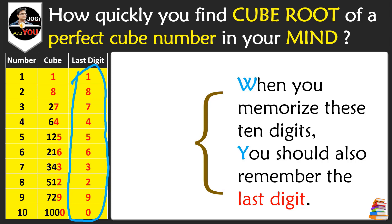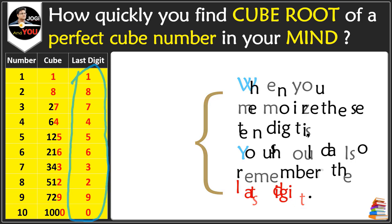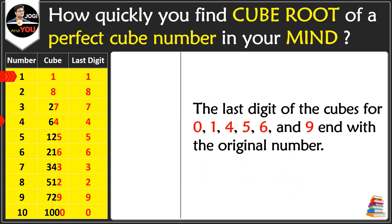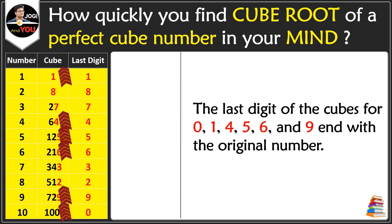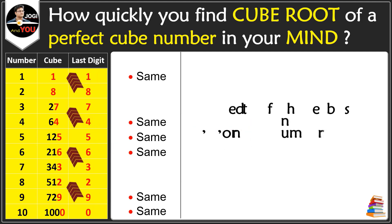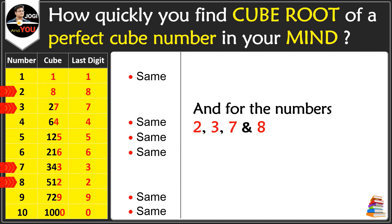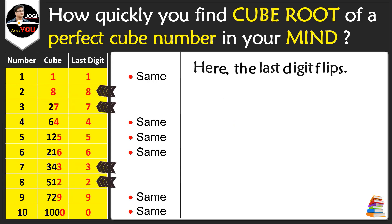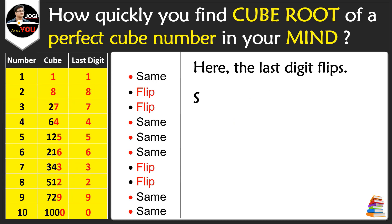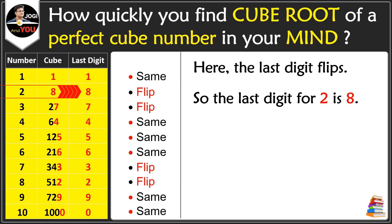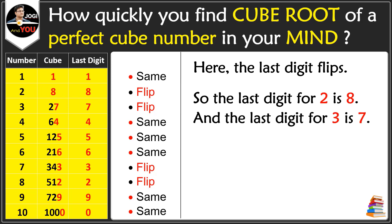An easy way to remember this is that for the numbers 1, 4, 5, 6, 9, and 10 (or 0), the last digit of the cube ends with the original number. For the numbers 2, 3, 7, and 8, the last digit flips. So the last digit for 2 is 8, and the last digit for 3 is 7, and vice versa.